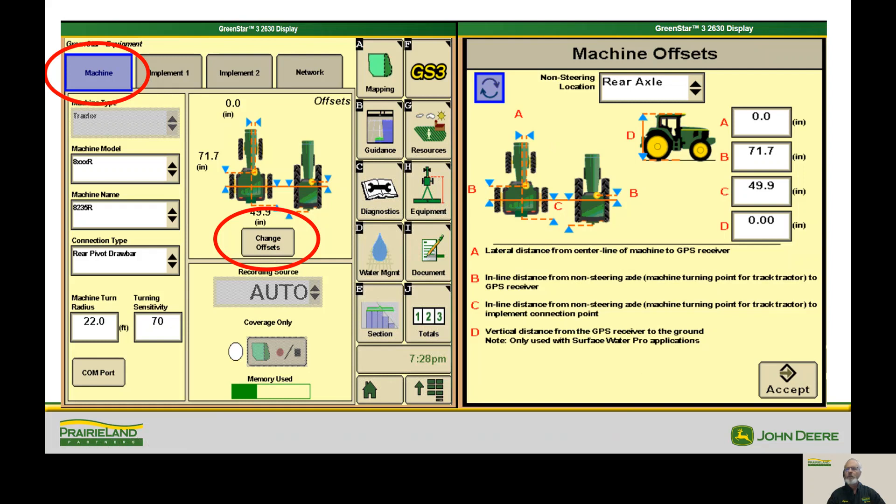This screen is where we put our measurements in inches. The letter A, which is the receiver offset, is always going to be zero on the tractor unless the receiver is positioned other than in the middle of the tractor. So I don't want to see measurements there for offset. We'll talk about that later. Again, in inches, put in the measurements and make them add up to that long measurement we made initially.